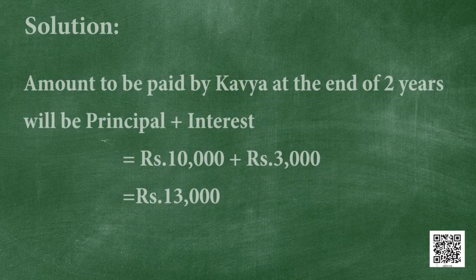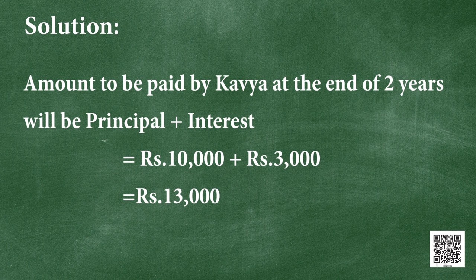We found that the simple interest is rupees 3,000. We should also find the total amount Kavya has to pay after 2 years. The total amount is the principal plus simple interest, that is rupees 10,000 plus rupees 3,000, which equals rupees 13,000.